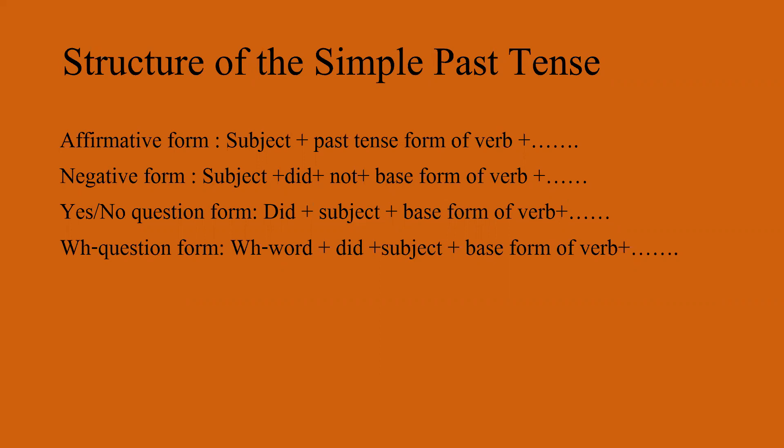The affirmative form of the simple past tense is used to talk about actions that happened and were completed in the past. The structure of the affirmative form is: subject plus past tense of the verb plus object if any. For example, I played soccer yesterday. She ate an apple for breakfast.